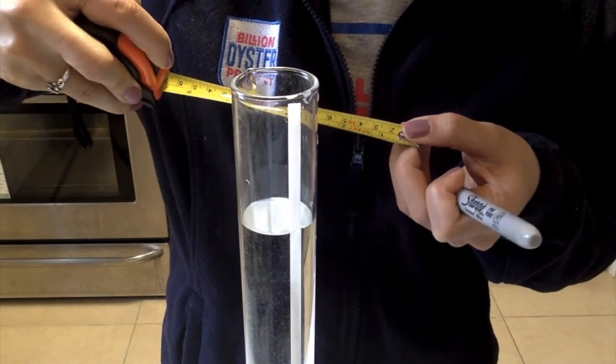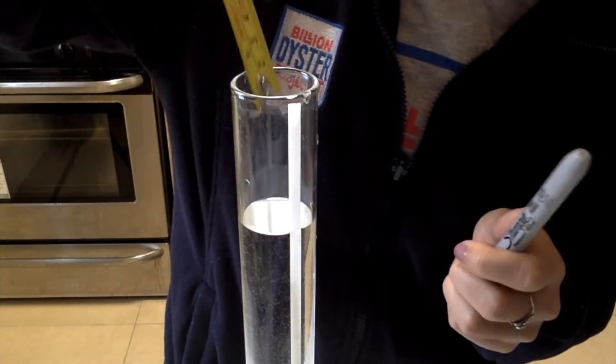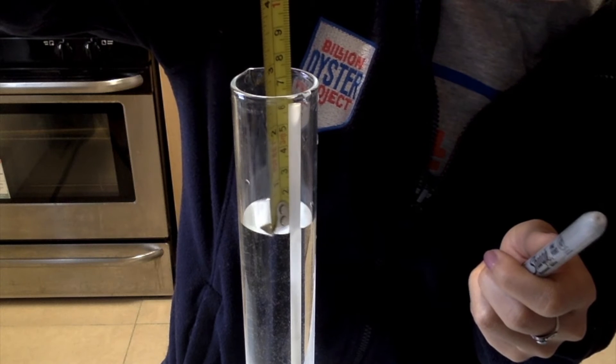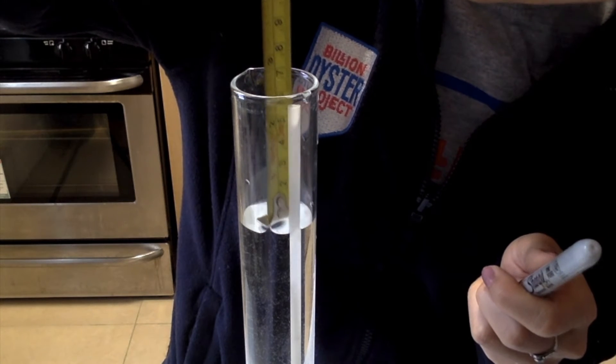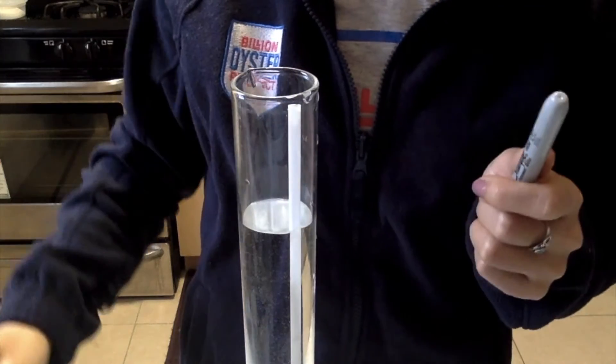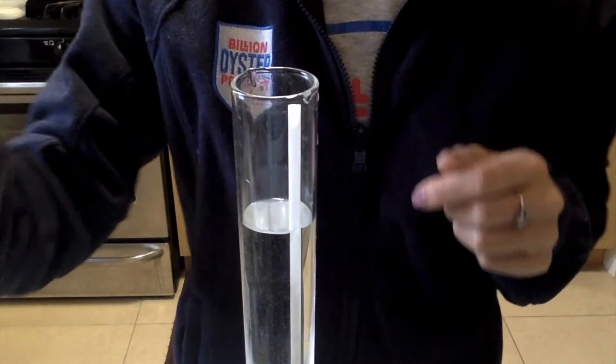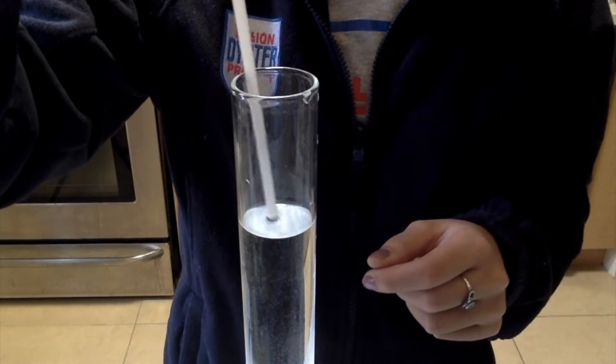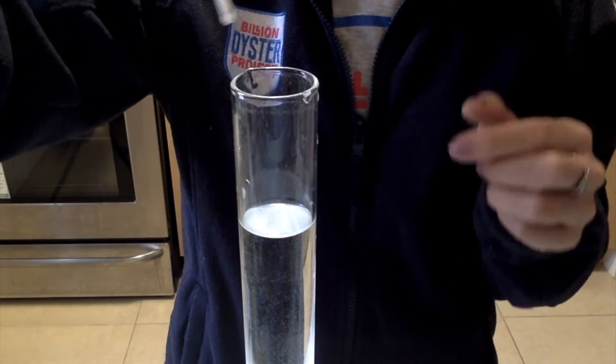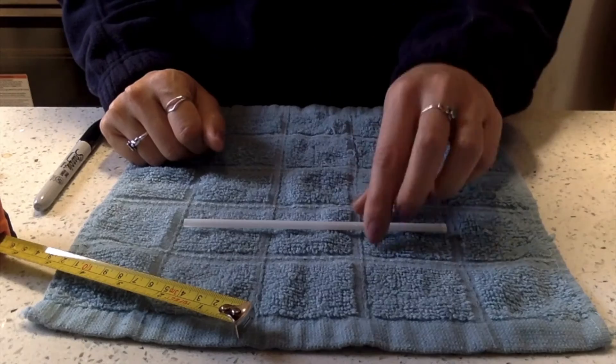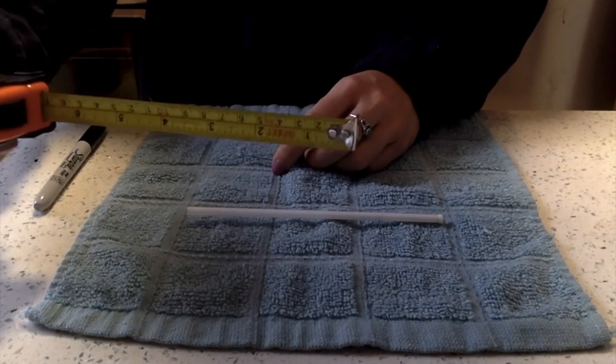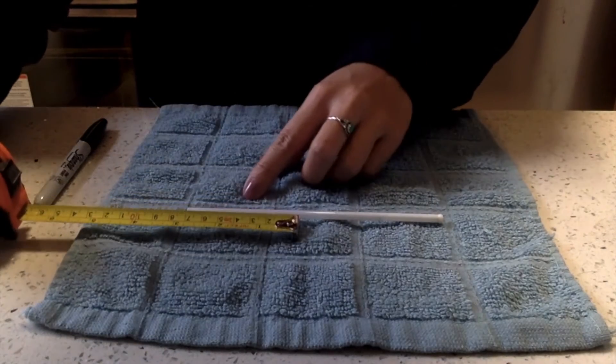Once you have your hydrometer floating, take your permanent marker and your measuring tape. Measure the length of the straw that is above the water and record that number. Then, remove your hydrometer from the water. Measure out and mark the same length at the top of the straw. Try to be as accurate as possible.